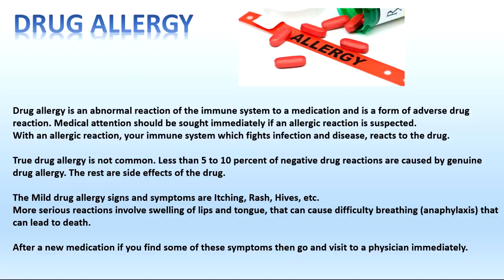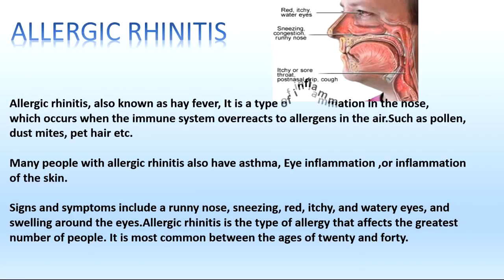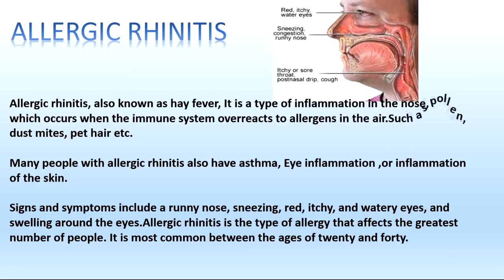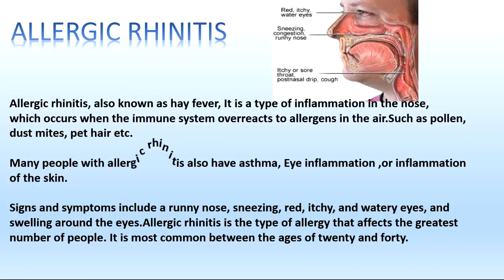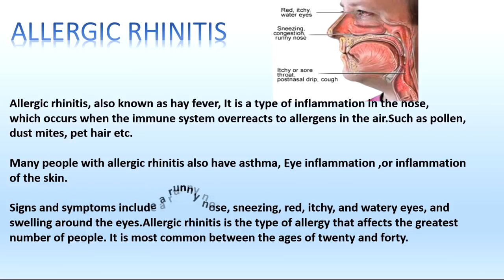Allergic rhinitis, also known as hay fever, is a type of inflammation in the nose which occurs when the immune system overreacts to allergens in the air such as pollen, dust mites, pet hair, etc. Many people with allergic rhinitis also have asthma, eye inflammation, or inflammation of the skin.